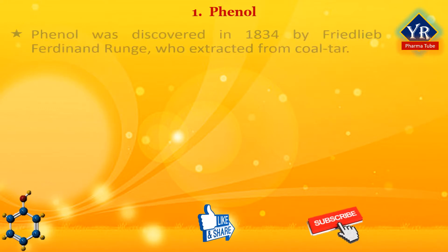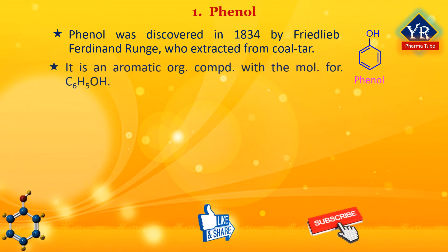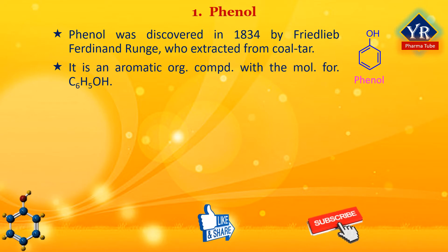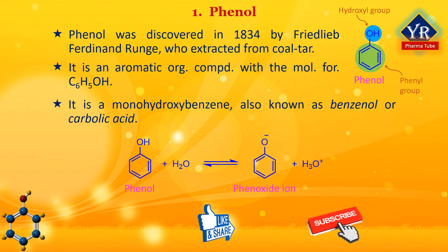Let's begin with phenol. Phenol was discovered in 1834 by Friedlieb who extracted phenol from coal tar. It is an aromatic organic compound with the molecular formula C6H5OH. The molecule consists of a phenyl group bonded to a hydroxyl group. It is a monohydroxybenzene also known as benzenol or carbolic acid. Electron pairs of oxygen atom are conjugated with the aromatic system and cause partial transfer of negative charge from oxygen to the ring and delocalization of the charge.